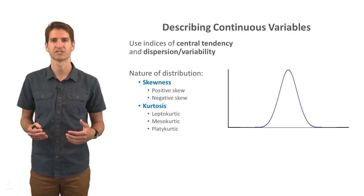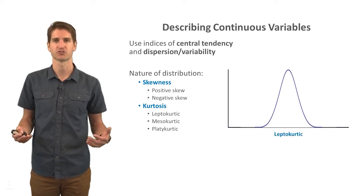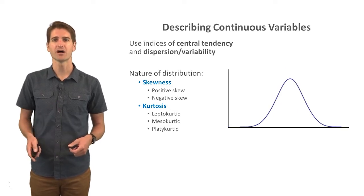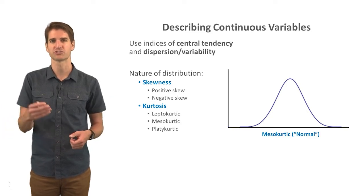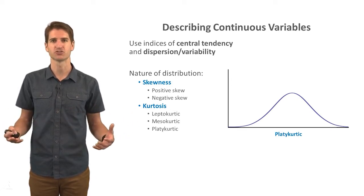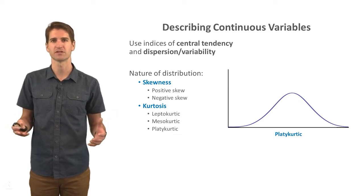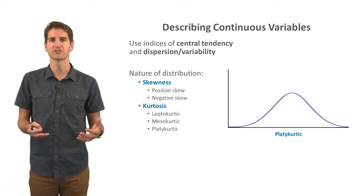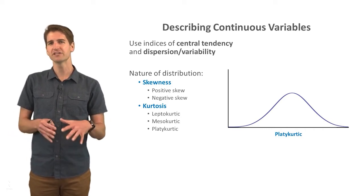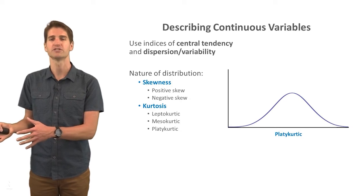Now let's talk about kurtosis — essentially how fat or skinny our distribution is. A leptokurtic distribution is more narrow with really thin tails. This can be contrasted with a mesokurtic distribution, which is a normal distribution. A platykurtic distribution is going to have fatter tails and less of a peak to it. Both skewness and kurtosis are two things we want to look at to assess the extent to which a variable is normally distributed. There are different indices of skewness and kurtosis that statistical software packages will provide automatically, but nothing beats looking at the variables visually displayed.